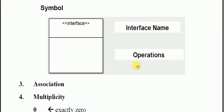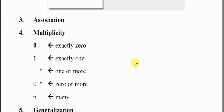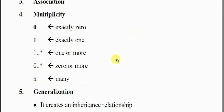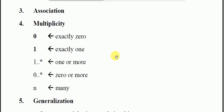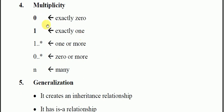What type of association is there? This is our multiplicity. Zero means exactly zero, one means exactly one, one star means one or more, zero star means zero or more, and n means many. You can see which class is associated with each class.